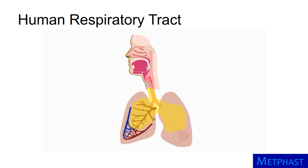The air finally reaches the alveolar region of the lung — the deep lung. Air is almost stationary in the alveoli, providing time for oxygen to diffuse through the alveolar wall and enter the blood, and for carbon dioxide to leave the blood and enter the air that will subsequently be exhaled.